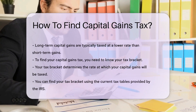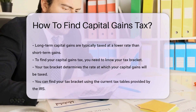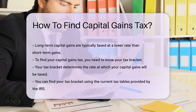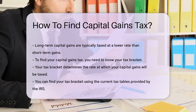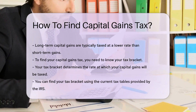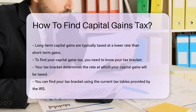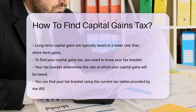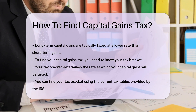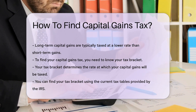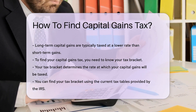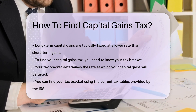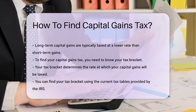To find your capital gains tax, you need to know your tax bracket. Your tax bracket determines the rate at which your capital gains will be taxed. You can find your tax bracket by referring to the current tax tables provided by the IRS. Once you know your tax bracket, you can apply the appropriate rate to your capital gains.